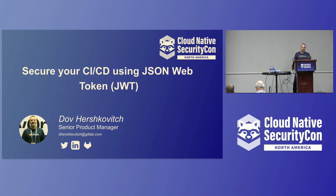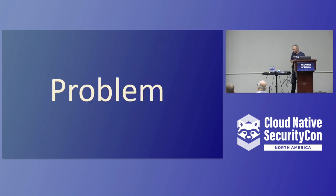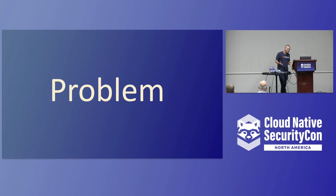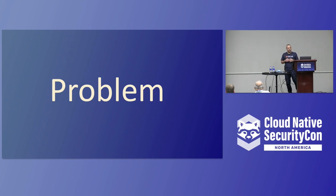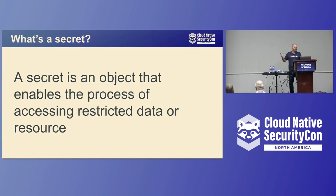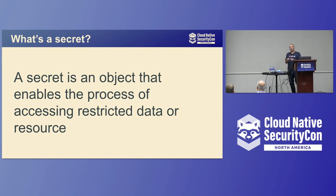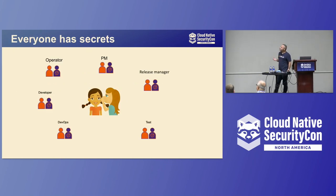In product practice we love to start with the problem — the problem statement — and then lean into our engineering team to find the right solution. But before I can talk about the problem I want to set the record straight and give some background with some definitions. I know it's a security conference and you've probably heard a lot about what a secret is, but let's do that quickly. A secret is an object that enables the process of accessing restricted data or a resource — meaning the data itself is not the secret, but the key to access it is.